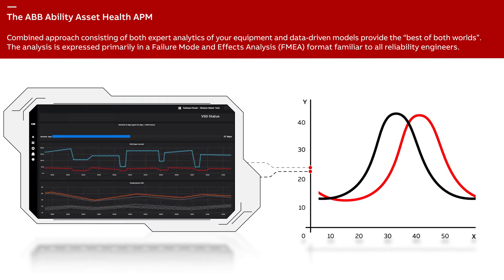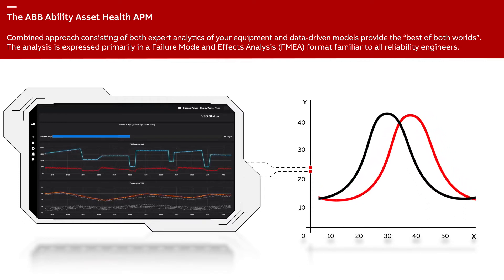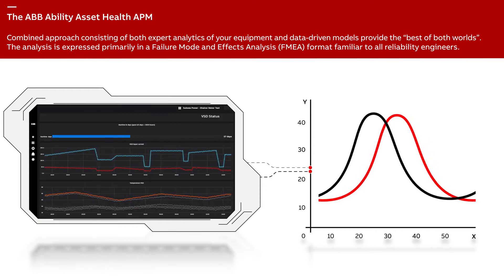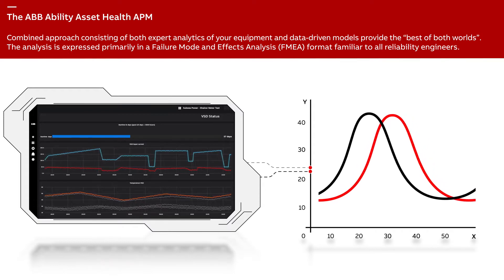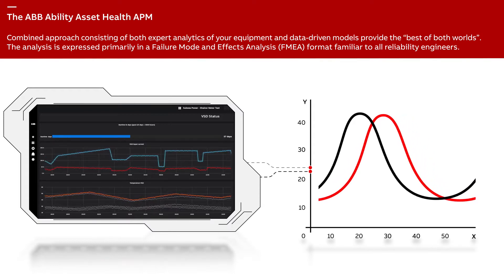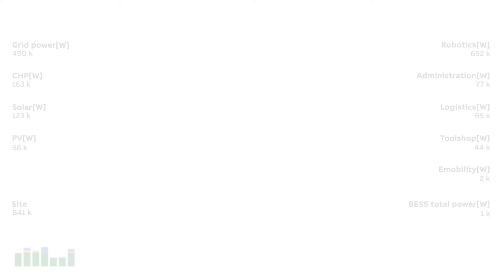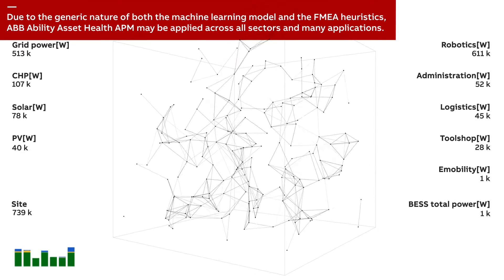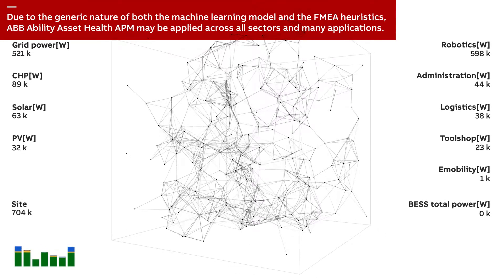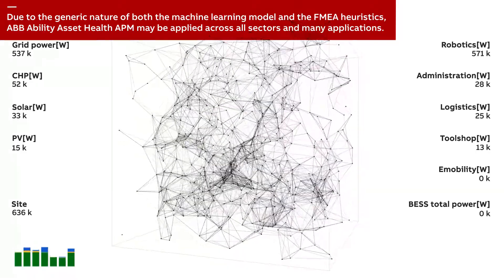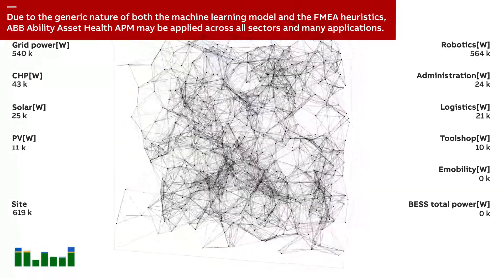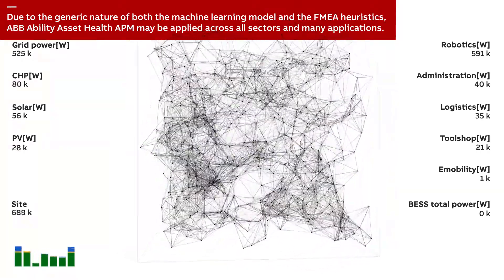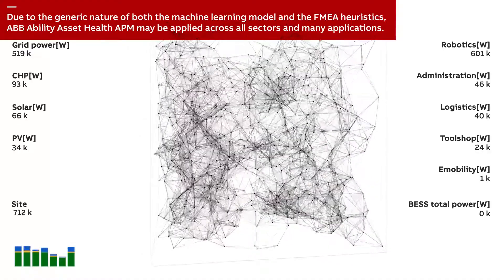The analysis is expressed primarily in a Failure Mode and Effects Analysis format, familiar to all reliability engineers. Due to the generic nature of both the machine learning model and the FMEA heuristics, ABB Ability Asset Health APM may be applied across all sectors and many applications.